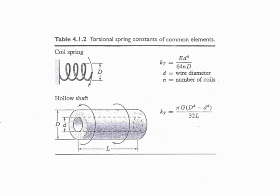The last two elements given are torsional elements: a coil spring, but now in torsion, and a hollow shaft.